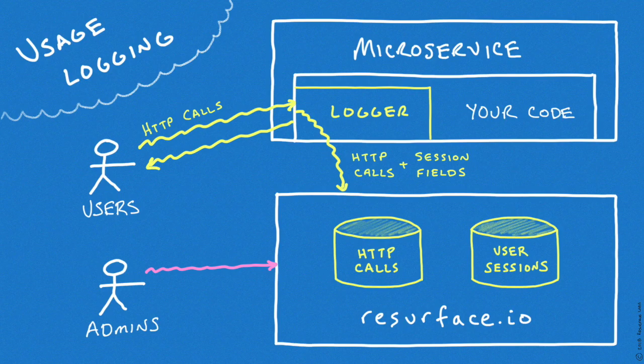On the backend, Resurface.io creates meaningful and actionable datasets from the raw data provided. These datasets include real HTTP calls and partial or complete user sessions, all recorded using responsible privacy protections. These datasets give the visibility needed to drive improvements in application quality, user experience, and business performance.